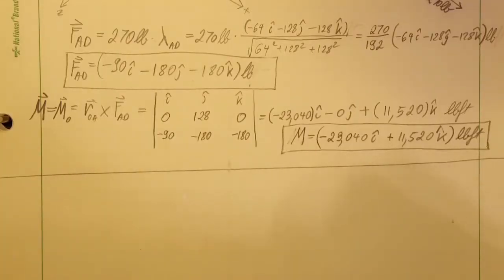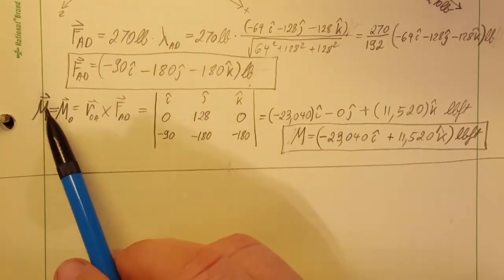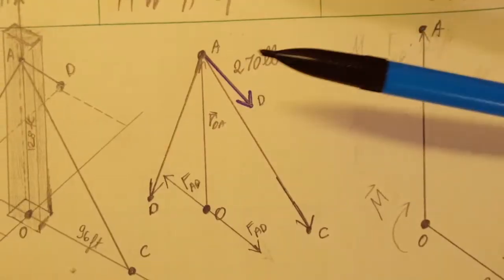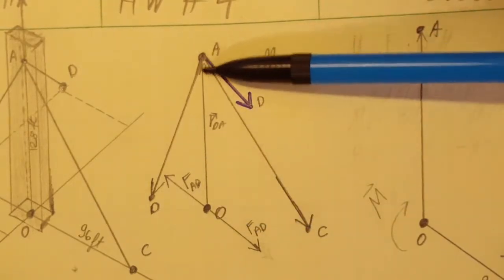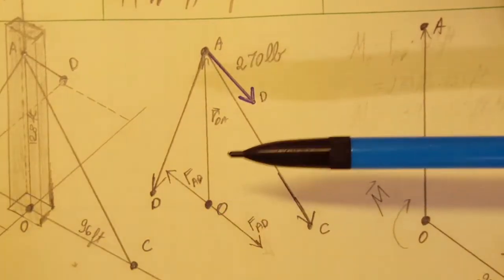And this is what we're gonna work with. We're gonna use the couple, the moment of the couple, which is the same as the moment of this force around point O. But the entire distance, not half. So the couple, the way it was in the formula.